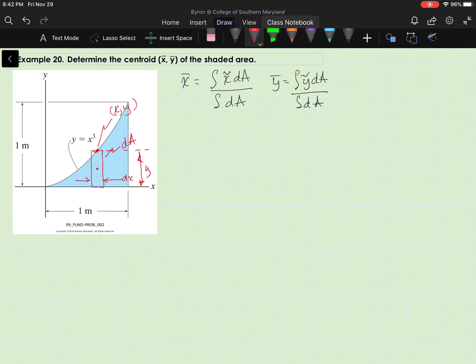And the location of the centroid of the element, x tilde, is there. And that just equals x. And y tilde, I'm going to show it over on the left side. Y tilde is y over 2. It's half the height of the element of the rectangle. The height of the rectangle is y, so half of that is y over 2.